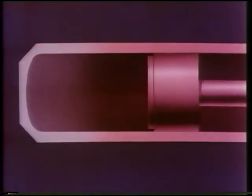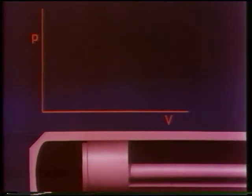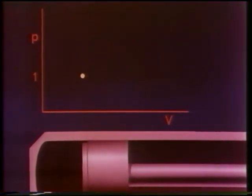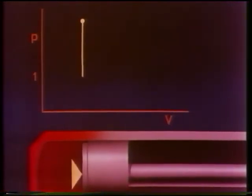If the cylinder head is cooled, the pressure of the gas decreases further. A force is now exerted on the piston in this direction — a force which drives the piston back to its original position. Let us relate this cycle to a PV diagram. We start with this given volume and the pressure of one atmosphere. When heat is supplied to the cylinder, the pressure rises. This distance is proportional to the force acting on the piston.